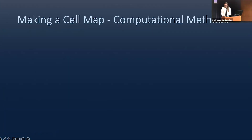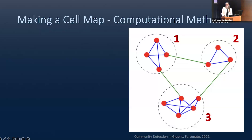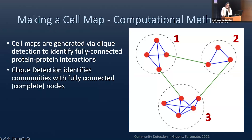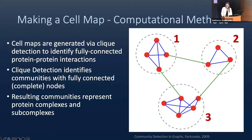To identify cellular components, a set of community and clique detection algorithms are used. In a basic graph, the circles are the nodes and the lines are the edges — the relationships between the nodes. In protein-protein interaction graphs, the nodes are individual proteins and the edges represent the distances between two proteins. To generate the final cell map, we look for communities which are highly connected and cliques which are fully connected within the protein graph. Communities one and three are not completely connected, while community two is a clique — it is fully connected. These communities and cliques represent cellular components and subcomponents.